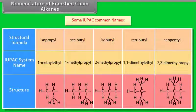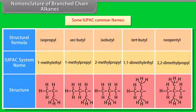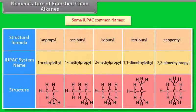Some IUPAC versus common names: common name isopropyl has IUPAC name 1-methylethyl; common name sec-butyl has IUPAC name 1-methylpropyl; common name tert-butyl has IUPAC name 1,1-dimethylethyl; common name neopentyl has IUPAC name 2,2-dimethylpropyl.